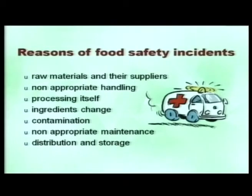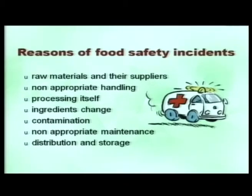There can be contamination at any stage in the food chain. There are incidents of non-appropriate maintenance where we can find iron filings, screws, and other hazardous things coming as a result of poor maintenance. There can be food safety incidents due to inappropriate distribution and storage, because once food is prepared and goes to retail and the consumer, there will be no further processing to reduce hazards or microorganisms.